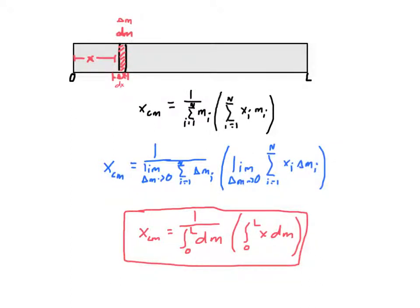What do you do whenever you have a rod and it's not a uniform density? We're going to start out with uniform density, but how do you calculate things that aren't exactly uniform or aren't exactly perfect or point masses? How would you calculate where its center of mass is? Well, here I have a rod, and I'm going to carve out a very small section, delta x, that has a mass, delta m.